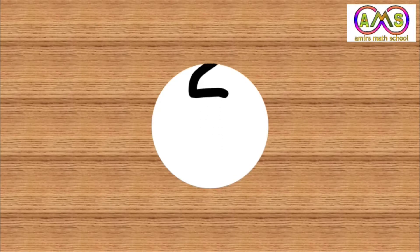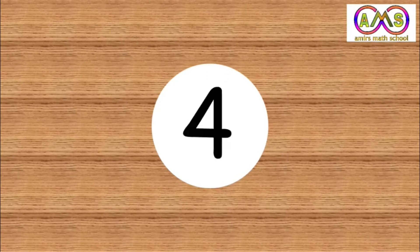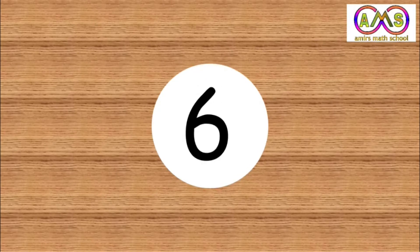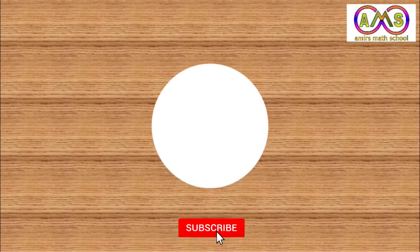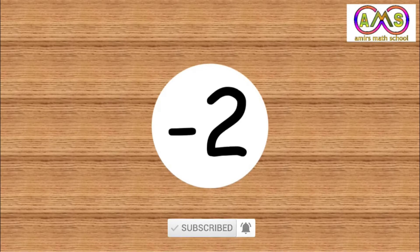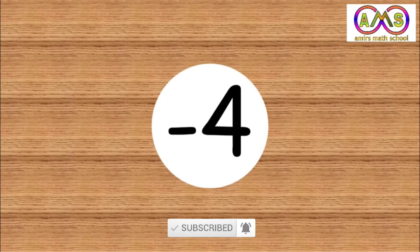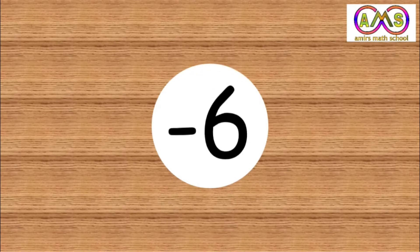We know 2, 4, 6, 8 — these are integer numbers, and we can say even integer numbers. What can we say for minus 2, minus 4, minus 6? That is the negative integer, or negative even integer. Welcome to Amir's Math School.